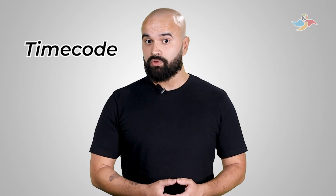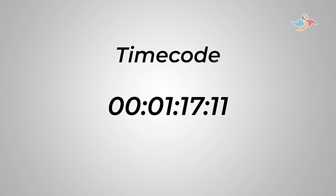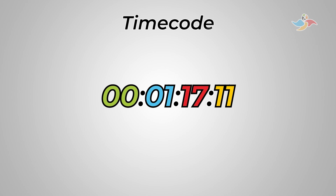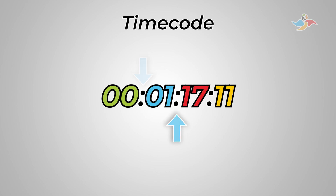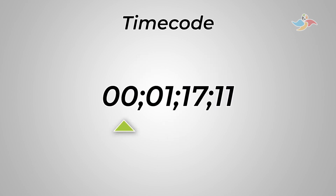Another factor to be considered is the timecode. A timecode is used to identify each specific frame. Each frame is assigned a unique timecode, and each timecode corresponds to one frame in the video. A timecode is usually structured as four pairs of numbers separated by colons or semicolons. From left to right, these pairs indicate hours, minutes, seconds, and frames.